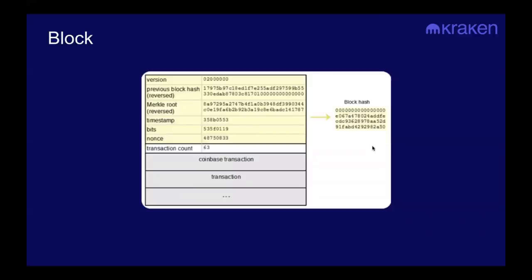What is a block? The block header contains a hash of the previous block, a Merkle root — which is the sum of all Bitcoin transactions hashed in a tree — a timestamp for approximately when the block was found by the miner, and the bits and the nonce.